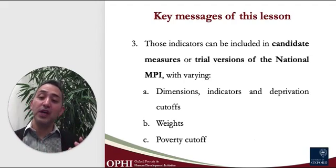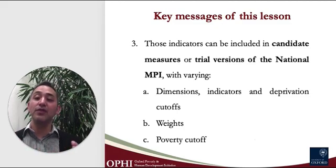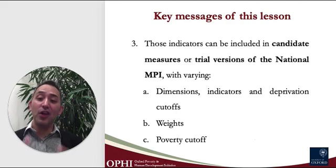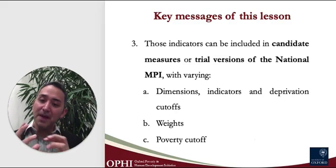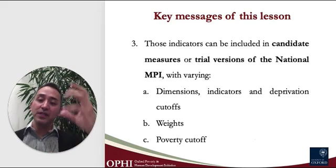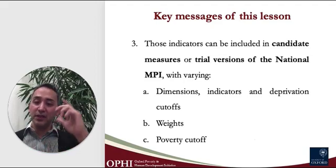A third way in which trial measures may differ is the poverty cutoff. One trial measure may define a person as being multidimensionally poor if they face weighted deprivations equivalent to one dimension or more, whereas another one can consider two dimensions or more. In essence, you can have a large number of candidate measures, but it is much preferable to have a small set of candidate measures that are meaningful, in the sense that they can be mapped out to real policy priorities. One measure can be designed to closely map the SDGs, whereas another can be designed to map the national development plan.